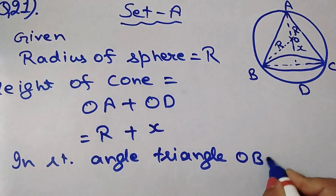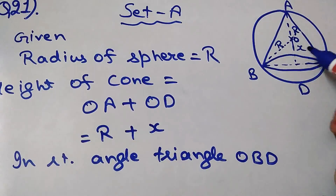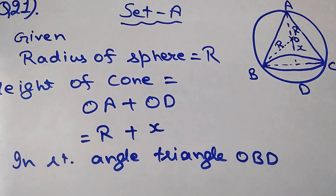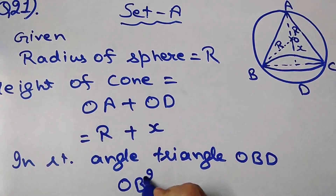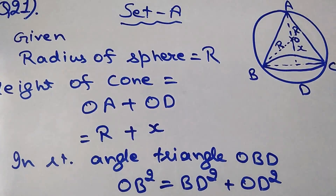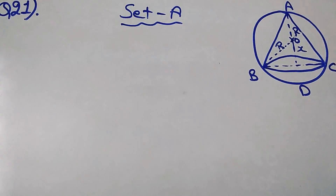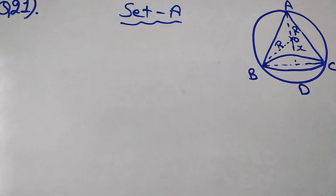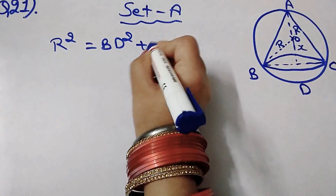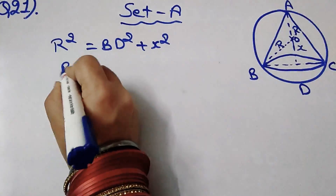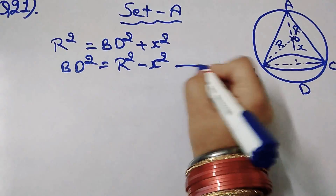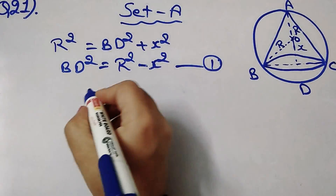In the right-angle triangle OBD, OB squared is equal to BD squared plus OD squared, where OB equals R and OD equals x. So R squared equals BD squared plus x squared, giving BD squared equals R squared minus x squared.